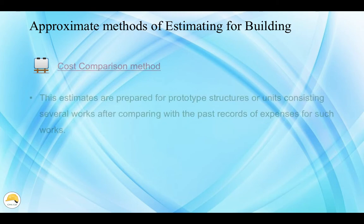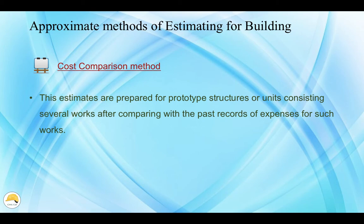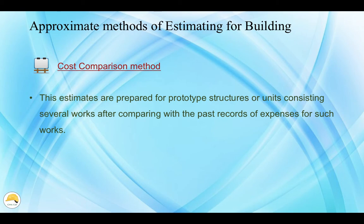The cost comparison method involves comparing a similar building to calculate the cost. Similar buildings like railway stations, street houses, and workplaces are used as a reference. What changes you see in the market is based on cost and rate. This method is a very quick method — we can get results from the market variations and experience.